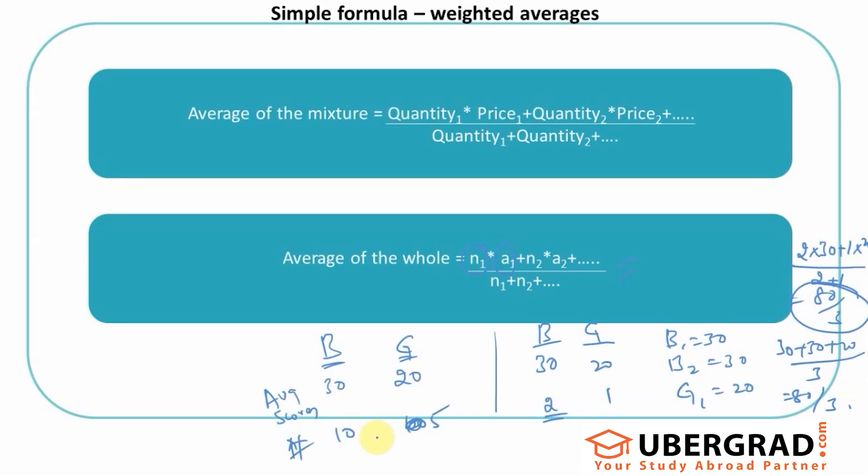Based on this, what should I do to find out the average score of the entire class in this case? So 10 boys with average score of 30 plus 5 girls with average score of 20, divided by 10 plus 5. That's 300 plus 100, which is 400 by 15. That's the answer for this.